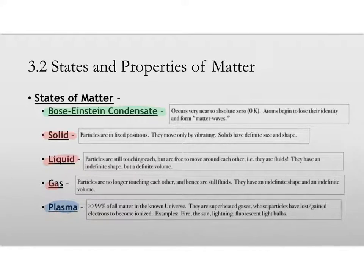Now, the Bose-Einstein condensate occurs at very near to absolute zero, or zero Kelvin. And what happens if you take a solid substance, or a liquid, or whatever, and you cool it down to nearly absolute zero, the atoms in the sample begin to lose their identity, and they form what are called matter waves.